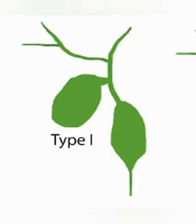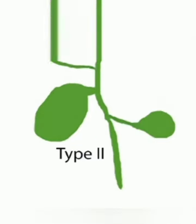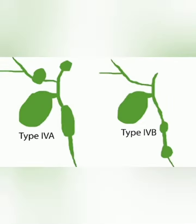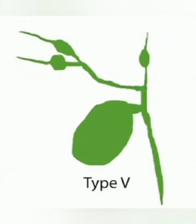In type 1, cystic, saccular, or fusiform dilatation of the CBD. In type 2, diverticulum of the CBD. In type 3, dilatation of the intraduodenal part of the CBD, meaning choledochocele. In type 4a, intra-hepatic plus extra-hepatic dilatation of the biliary tree. In type 4b, only extra-hepatic part dilatation of the biliary tree. In type 5, also called Caroli's disease.